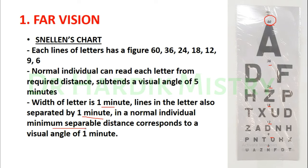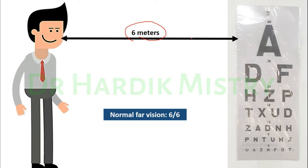In a normal individual, the minimal separable distance — the minimum distance between two points that can be perceived as two separate points — corresponds to a visual angle of 1 minute. Tell your subject to stand 6 meters away from the Snellen chart and ask them to read the letters while you point with a scale. For example, you ask 'Can you read this letter?' and the subject will say 'A', 'D', 'F', and so on.